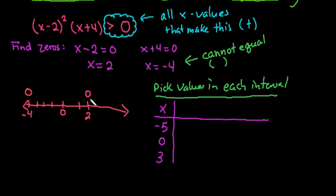You don't want to pick the zeros. You want to make sure that you pick a value that's to the left of, in between, and to the right of. I could have just as easily picked 1, negative 6, and 4. It doesn't matter as long as it falls in the interval. We're going to plug it into the equation x minus 2 squared times x plus 4, and we're going to look at our output, the sign of output.